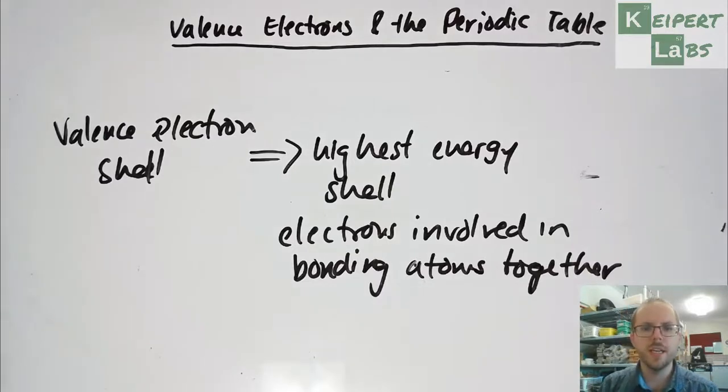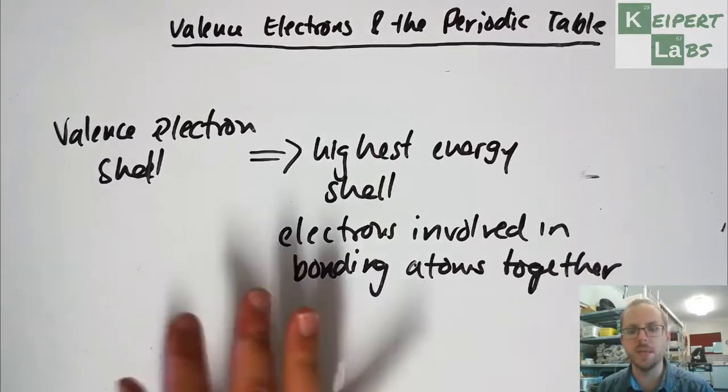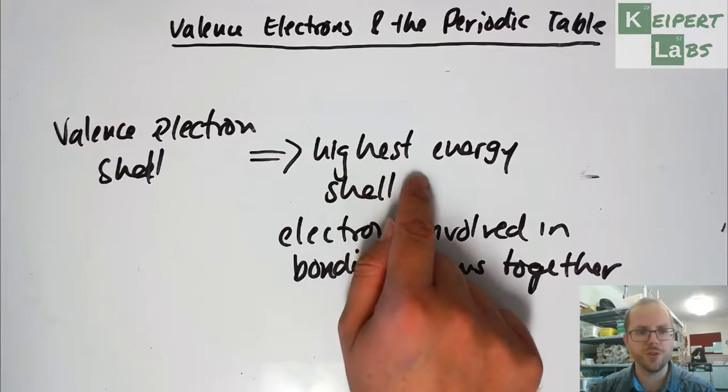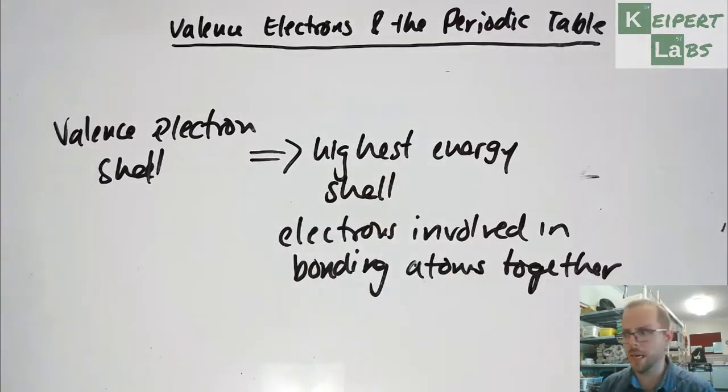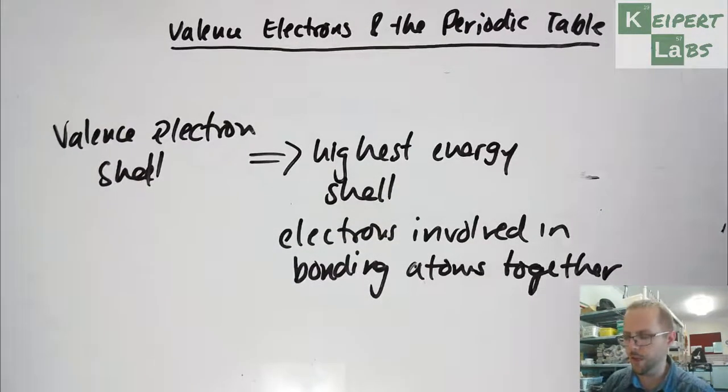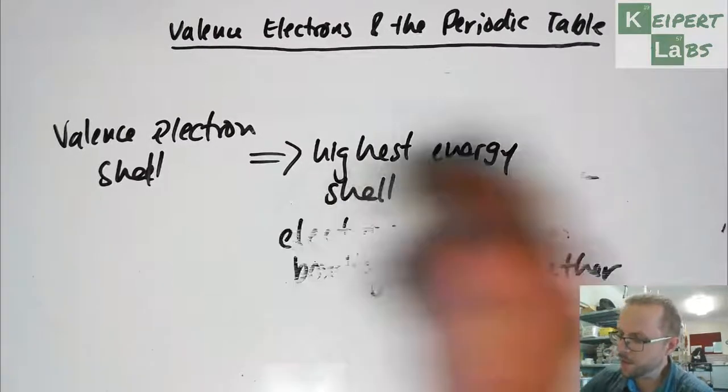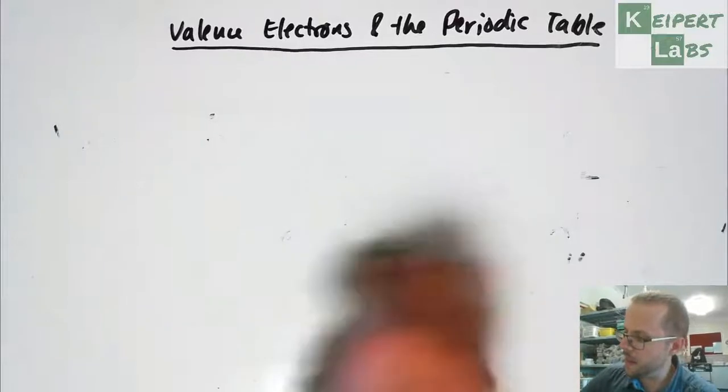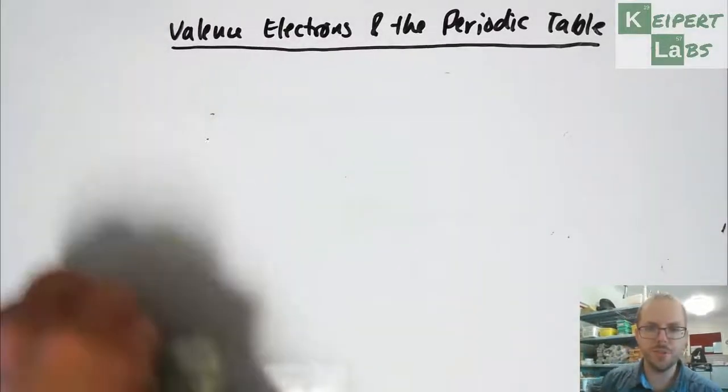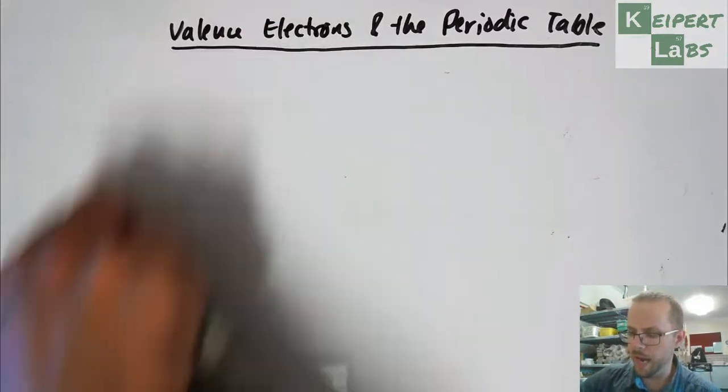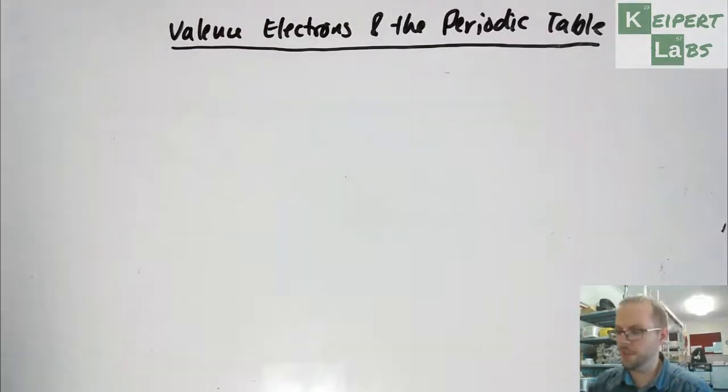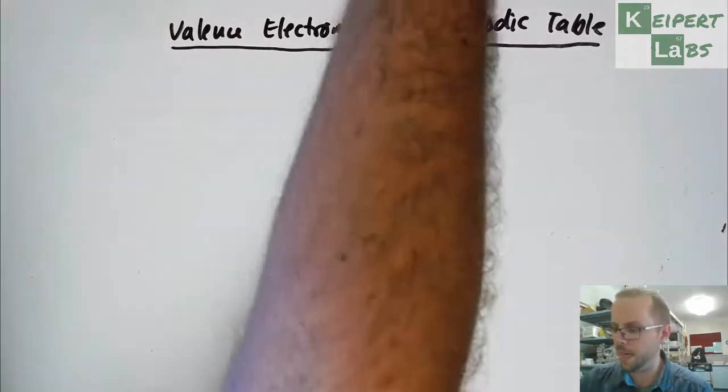And so what they are is the highest energy shell and that contains the electrons involved in bonding atoms together. So the valence electron shell contains the electrons that are going to be involved when one atom connects with another in some way. And it's the highest energy shell, that is, they're the first electrons to either be lost or gained from an atom when we're making an ion. We've talked about ions before. And these valence electrons are always kind of on the outer, or the highest sort of shell away from the nucleus.